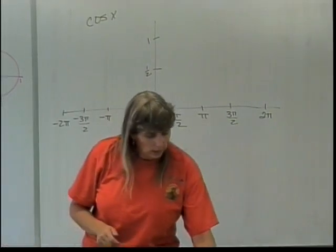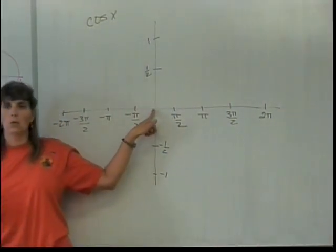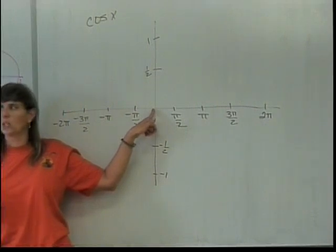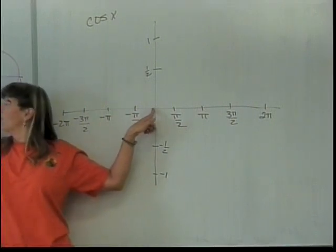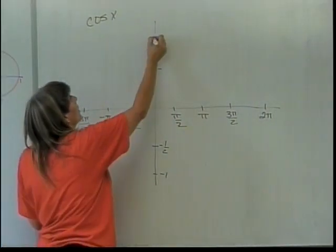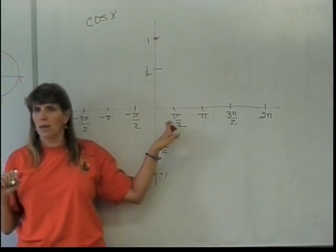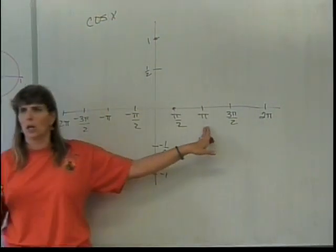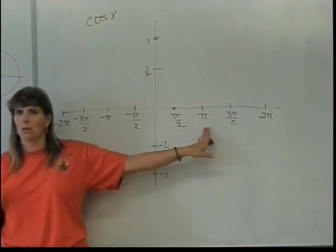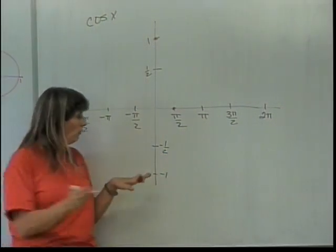Let's start plugging in some angles. When I'm at the angle 0, what is the cosine of that angle? The x-coordinate — it's 1. When I'm at the angle pi over 2, what is the cosine of that angle? 0. When I'm at the angle pi, what is the cosine of that angle? I'm going to get x-coordinates — negative 1.